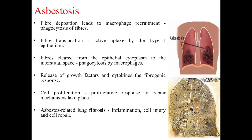Long-term exposure to asbestos can lead to a condition called asbestosis. As illustrated in the diagram, fiber deposition leads to macrophage recruitment and phagocytosis of the fibers. Fiber translocation involves active uptake by type I epithelial cells. Fibers then get cleared from the epithelial cytoplasm to the interstitial space and are phagocytosed by neighboring macrophages. This leads to the release of growth factors and cytokines, initiating a fibrogenic response involving cell proliferation and repair mechanisms. Asbestos-related lung fibrosis thus involves inflammation, cell injury, and cell repair.